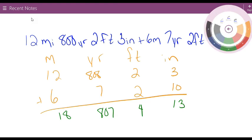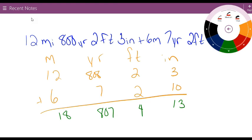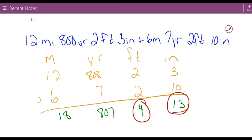We have issues with our inches and our feet because we know 13 inches gives us a foot. We're actually going to take 12 of these inches, add it over here, and be left with 1. Then here we have 5.